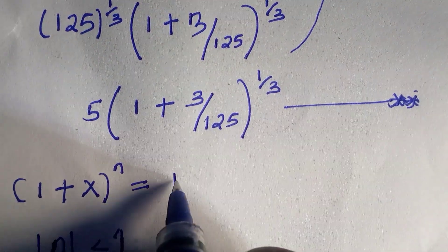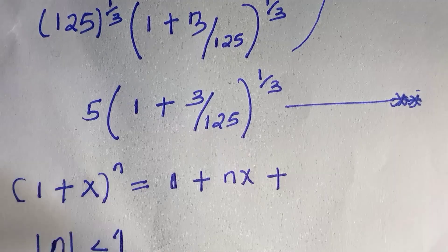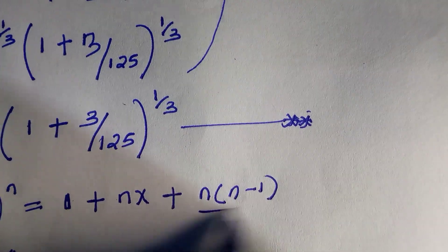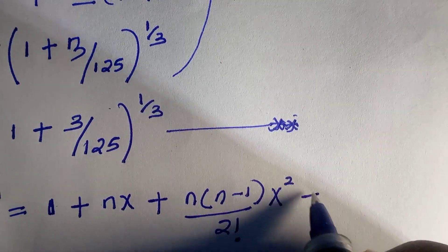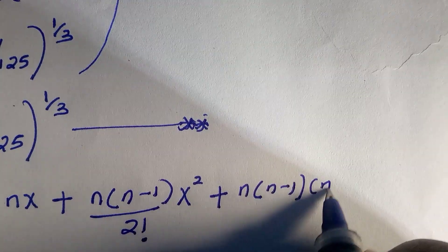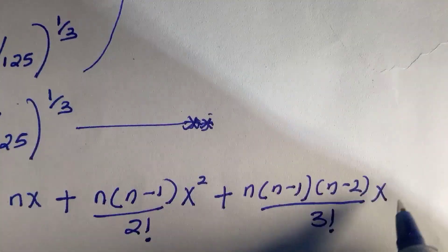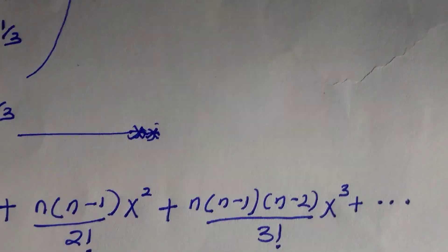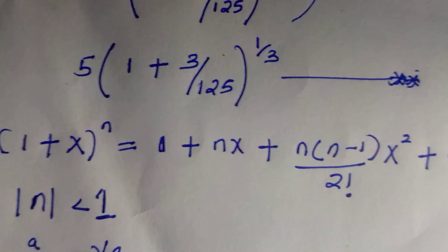By expanding using the binomial expansion, the result is: 1 + nx + n(n−1)/2! · x² + n(n−1)(n−2)/3! · x³, and so on. This is the general binomial expansion.